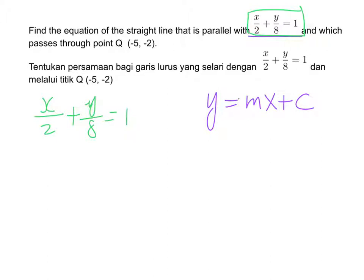Now this form is considered as an intercept form. So the 2 here is the x-intercept and 8 here is the y-intercept. So we are going to briefly sketch this graph. So x is 2 here, y is 8.